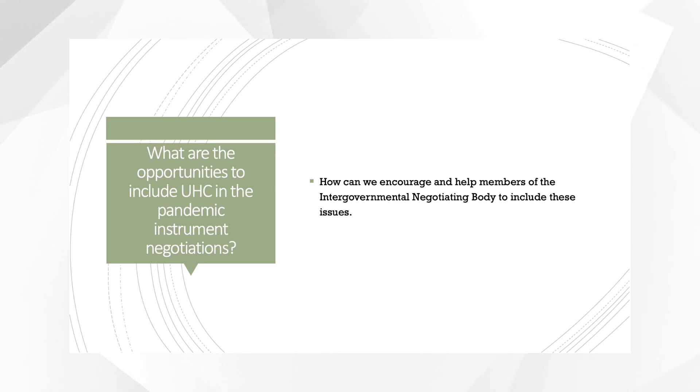So, having established why UHC matters in pandemic preparedness and our key policy objective of strengthening health systems, how can we encourage and help members of the Intergovernmental Negotiating Body to include these issues? The policy brief I mentioned in the introduction to this talk highlights existing UHC commitments and recommendations and proposes a checklist for negotiators to draw on.